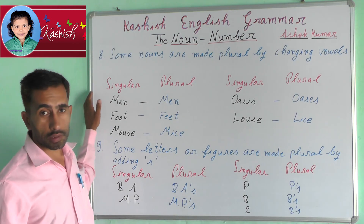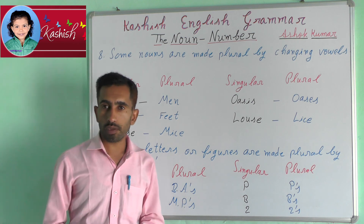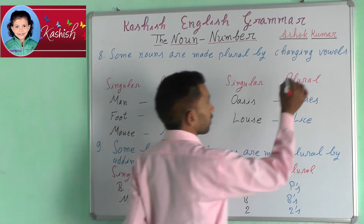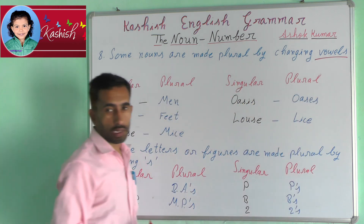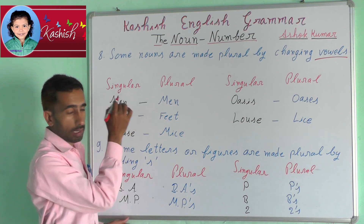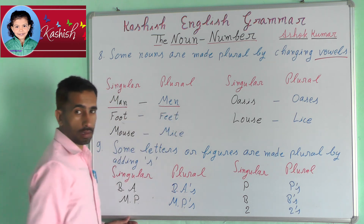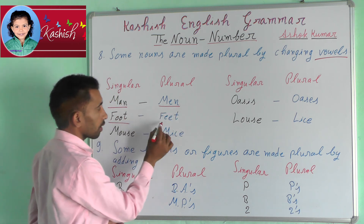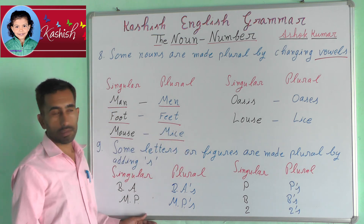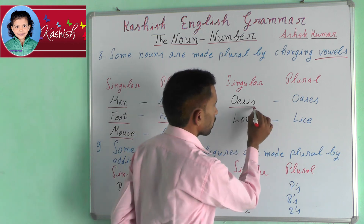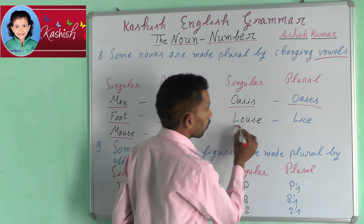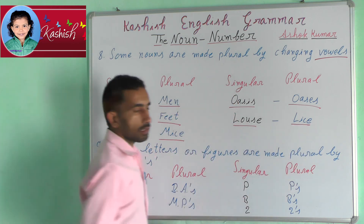Eighth rule: some singular nouns are made plural by changing vowels. For example: man → men, foot → feet, mouse → mice, oasis → oases, louse → lice.